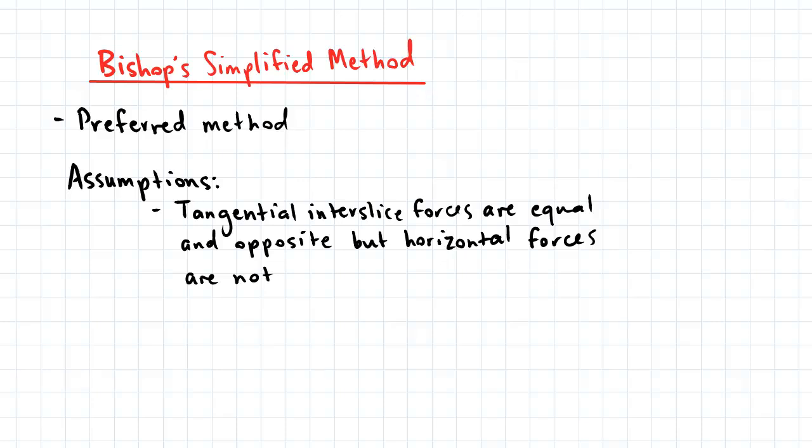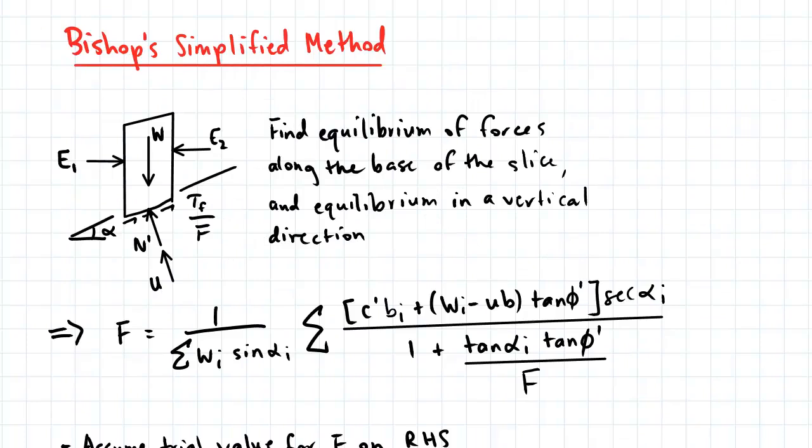The key assumption in Bishop's Simplified Method is that tangential inter-slice forces are equal and opposite, but horizontal inter-slice forces are not. This is what it means in a picture.